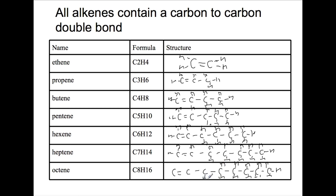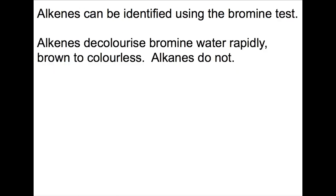When you see the numbers for the cracking, whichever hydrocarbon has double the number of hydrogens is the alkene that is being produced. You can identify alkenes by using the bromine test. Alkenes decolourise bromine water rapidly from brown to colourless, whereas alkanes do not.